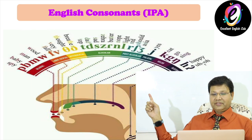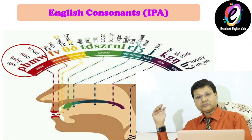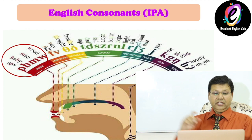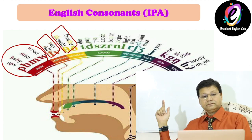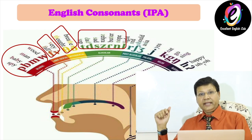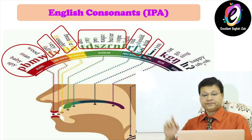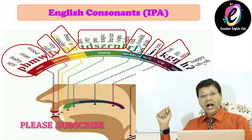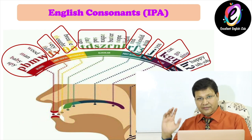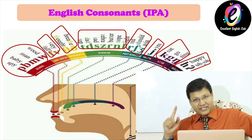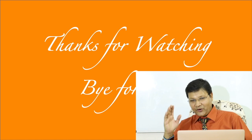Now I'll show you the complete chart with all the places of articulation and sounds. Bilabial: /p/, /b/, /m/; labiodental: /f/, /v/; dental; alveolar: /t/, /d/, /s/, /z/, /n/, /l/; post-alveolar: /r/, /sh/, /zh/; palatal: /j/; velar: /k/, /g/, /ng/; and finally glottal: /h/ and glottal stop. This is all about place of articulation. In the next video I will discuss the production of vowel sounds. Thank you for watching — bye for now!